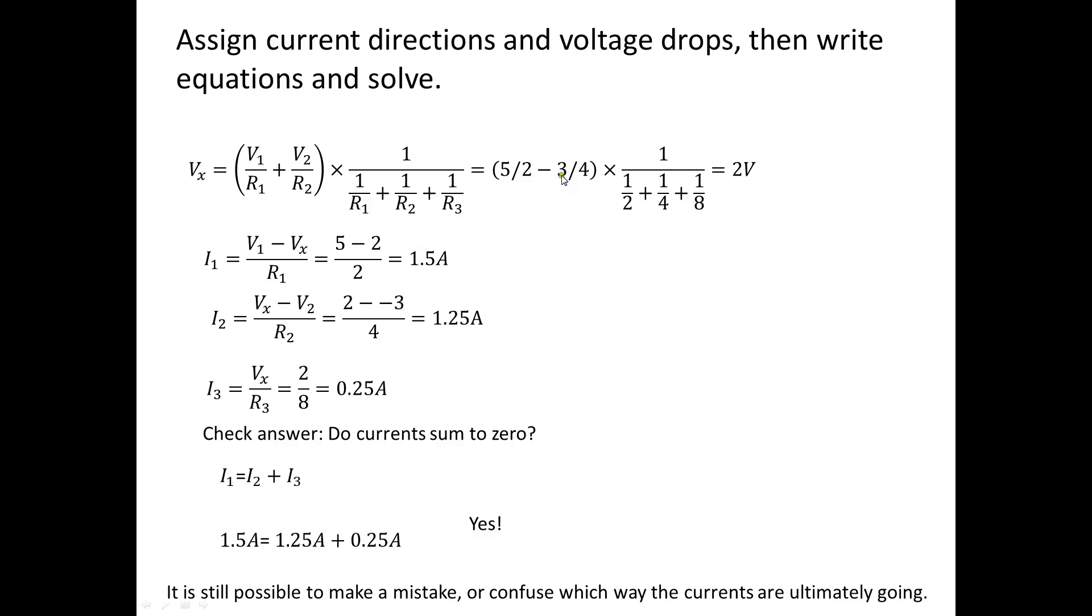Notice that the 3, it's a minus 3 when V2 is positive because V2 was minus 3 volts. So when I calculate I1, I get 1.5 amps. Notice on I2 it's Vx minus V2 but V2 is minus 3 volts so it's 2 minus minus 3 which is 5 divided by 4 which gives me 1.25 amps.